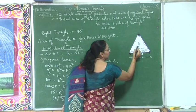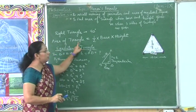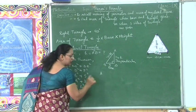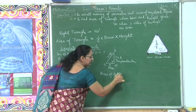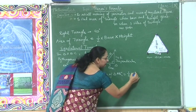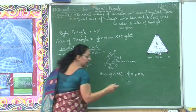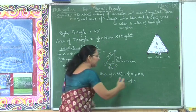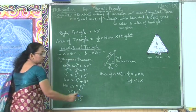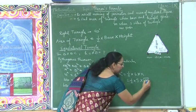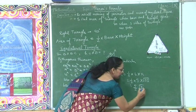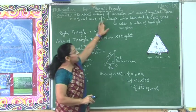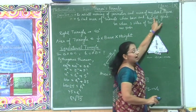Once we know the height, we can find the area of the triangle by substituting the values of base and height. The area of triangle ABC = half × base × height. The base is BC = 10 cm and the height is √75. So the area equals half × 10 × √75, giving us the area in square units.